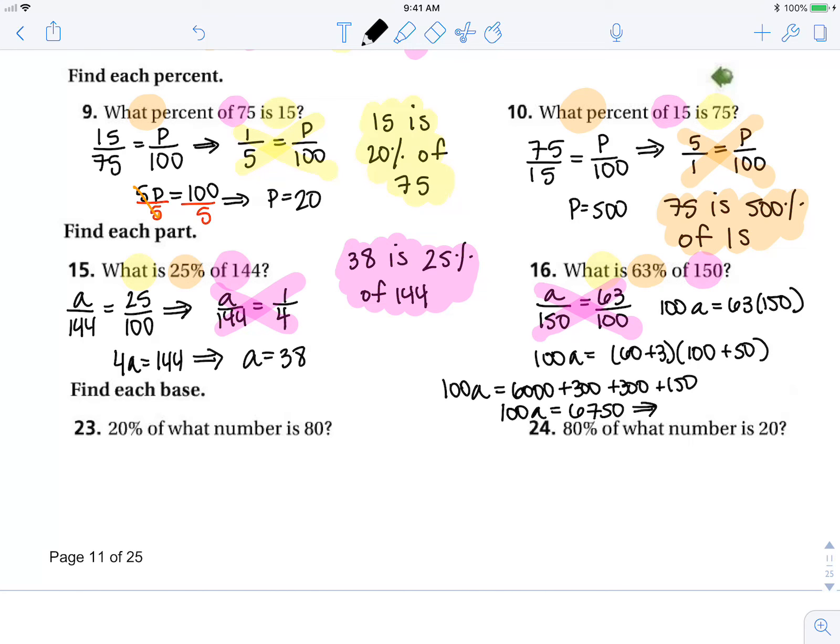Dividing by 100, a is 67.50. And I don't have enough room to write this answer, but 67.5 is 63% of 150.